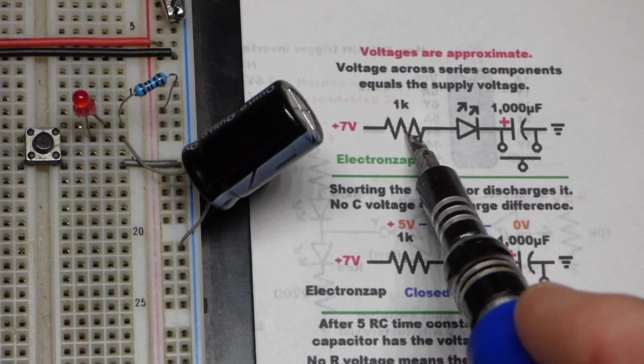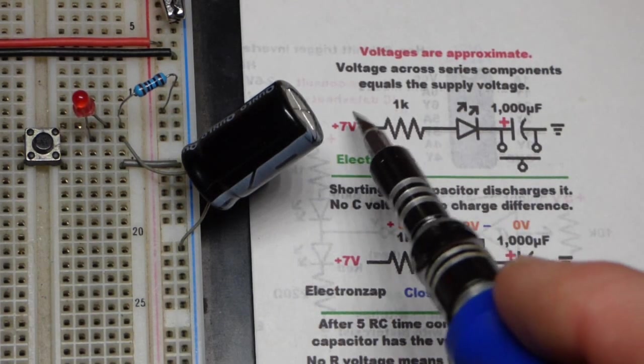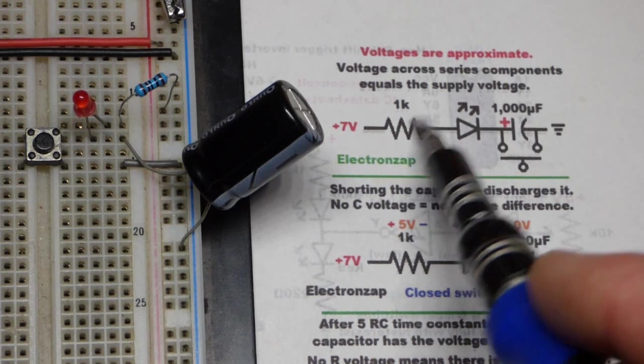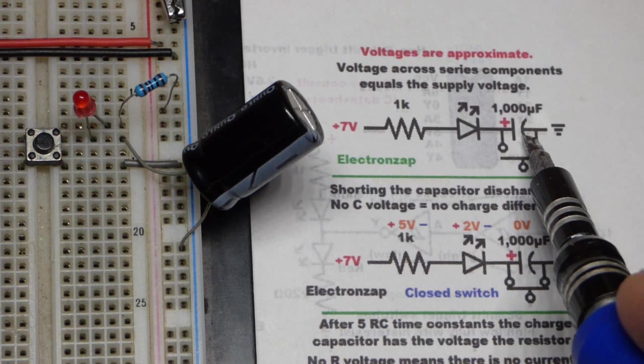So now in this video we're going to come back to an old diagram that I put together. So we have three series components here, the resistor, LED, and the capacitor.